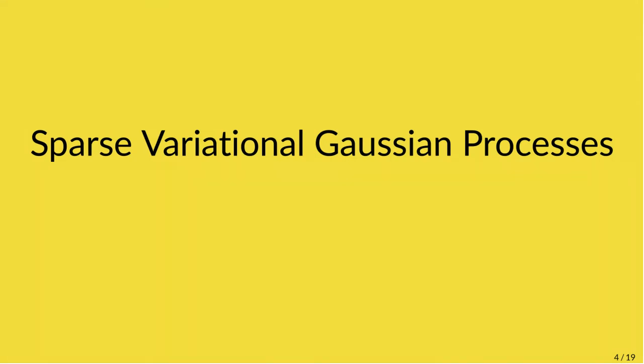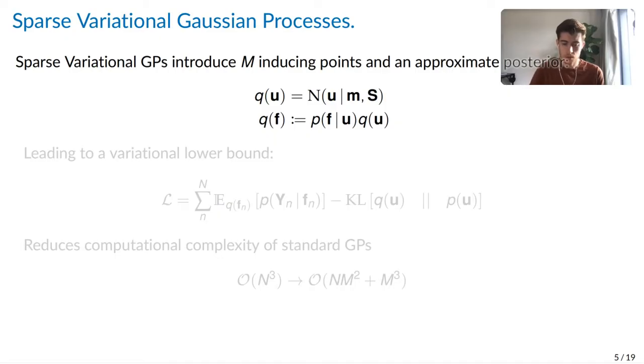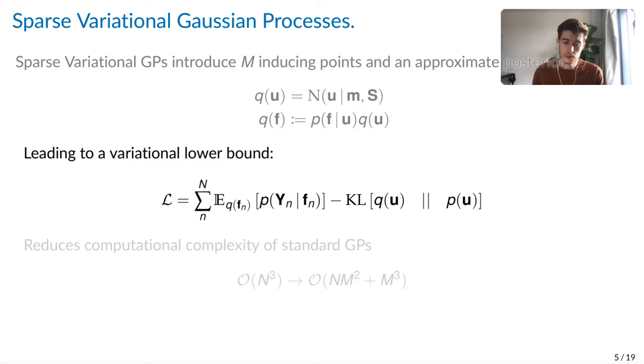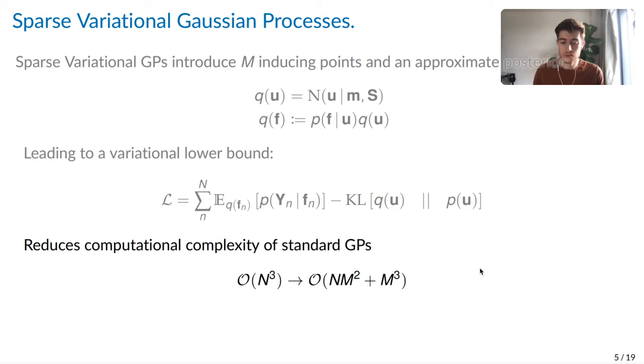So first, what are sparse variational GPs? SVGPs are a popular model that aims to reduce the computational complexity of GPs. This is done by introducing a set of M inducing points and an appropriate approximate posterior. By doing so, this leads to a variational lower bound which has a computational complexity that is cubic in M. This is great because it reduces the computational complexity of GPs from being cubic in the size of the data, so N in this case, to being cubic in the number of inducing points. And we are free to set how many inducing points we want, or free to vary M in this case.